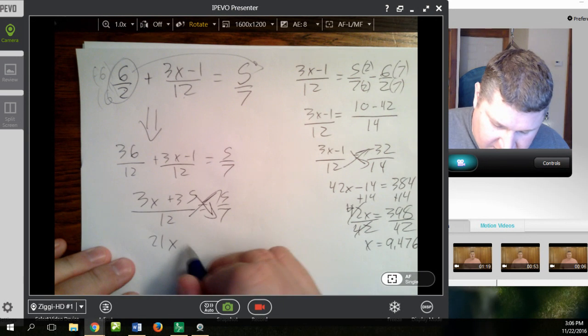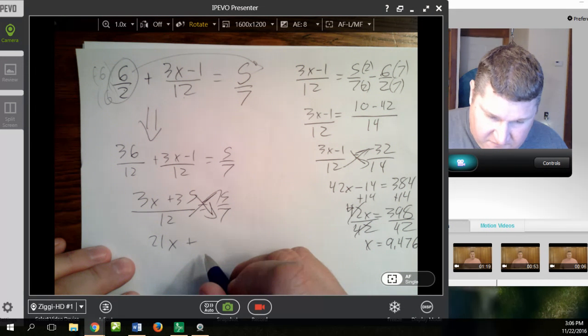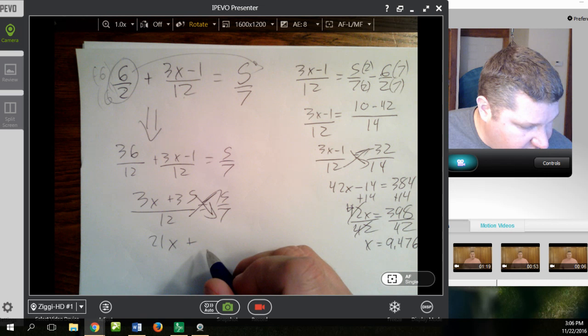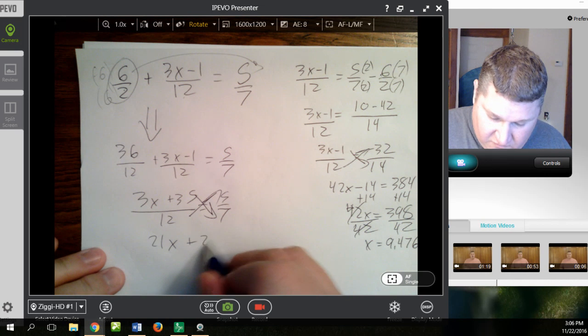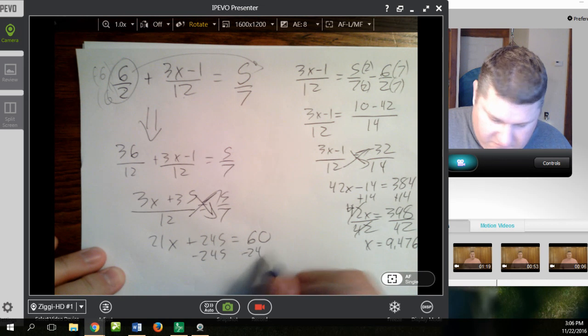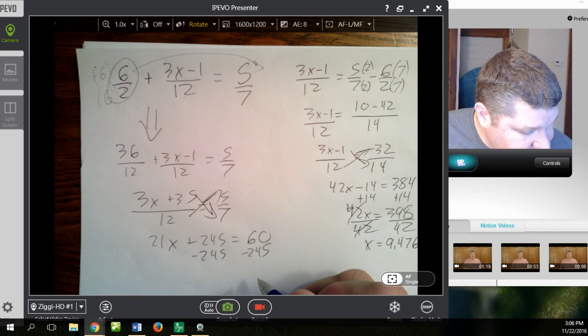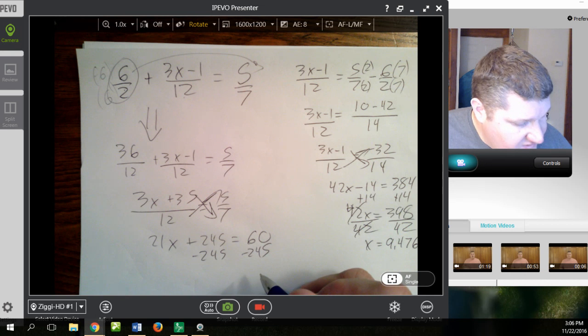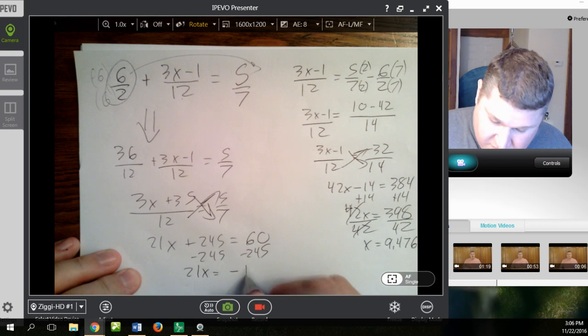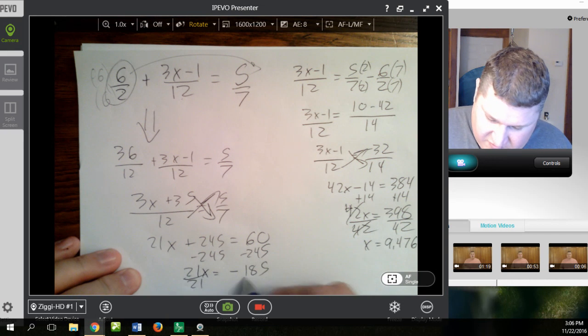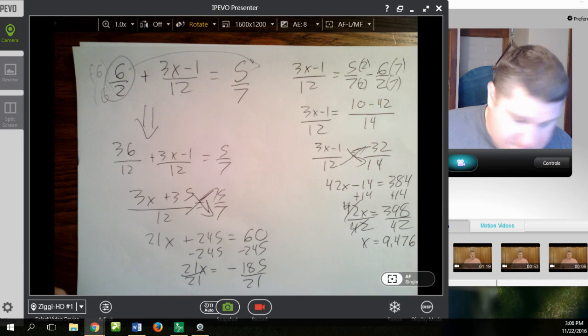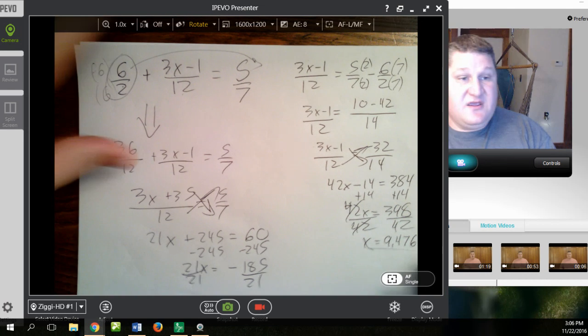So, 21x plus 49 times 5. So, I have 35 times 7. The answer is 245 equals 60 minus 245 minus 245. And I get 21x equals negative 185. Divide both sides by 21. And I get the same thing again, or I should.